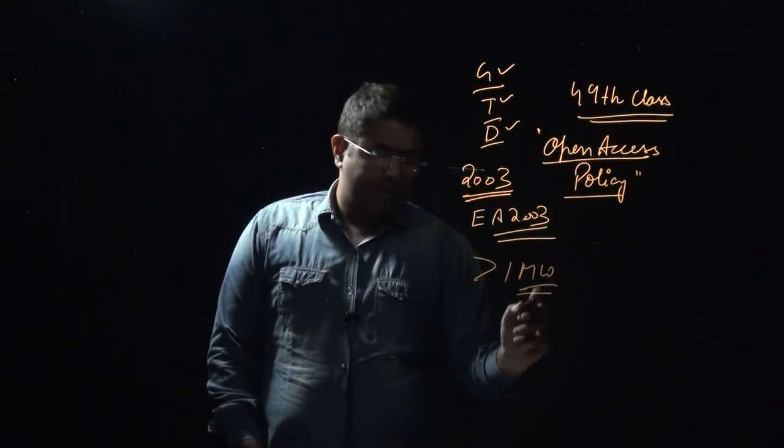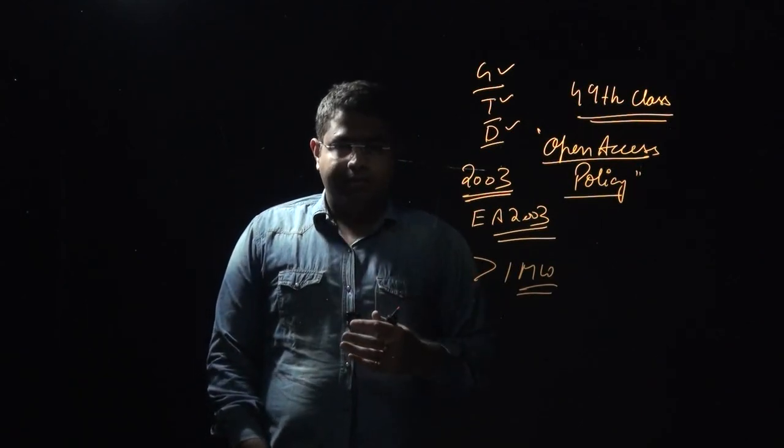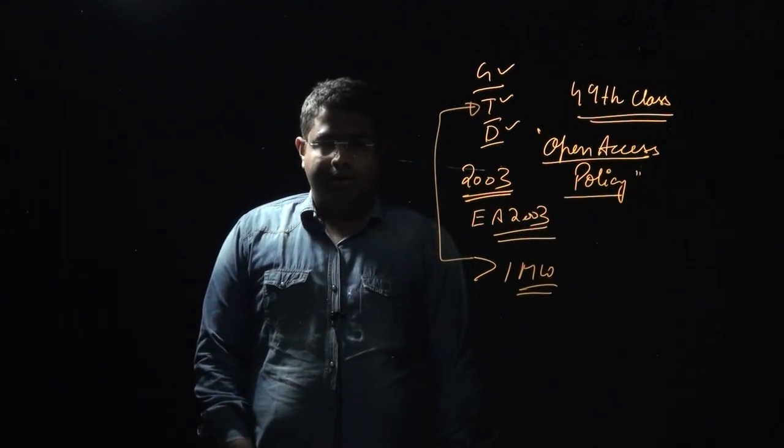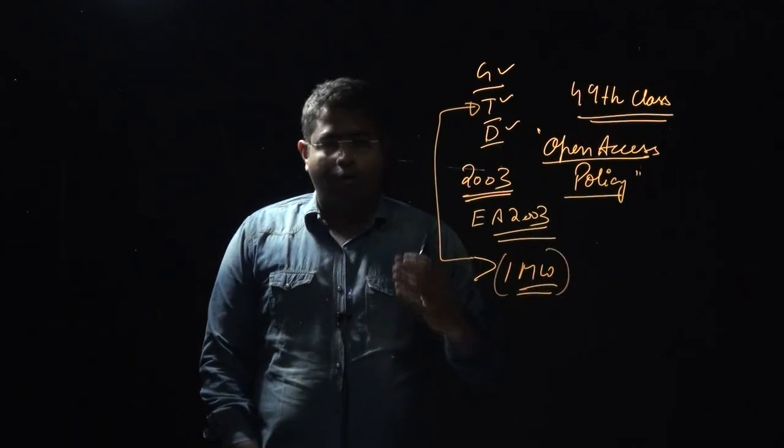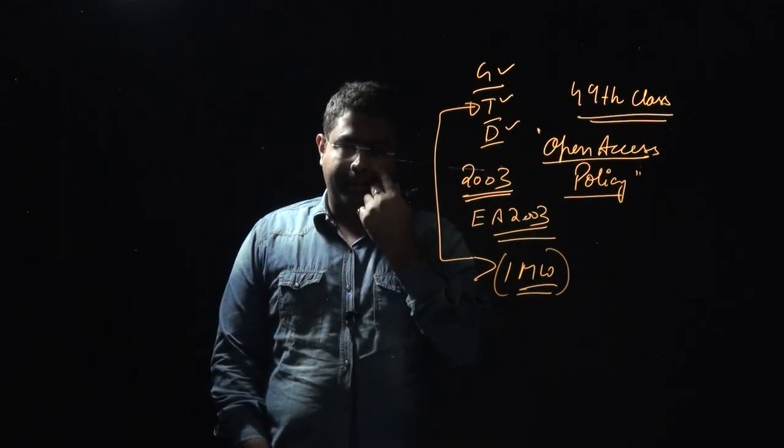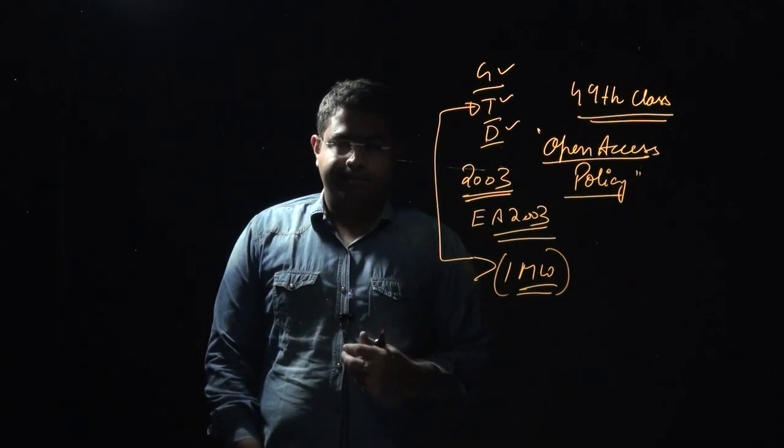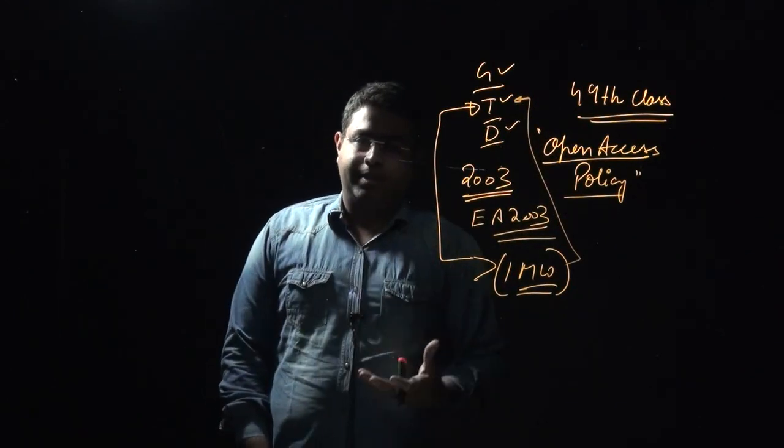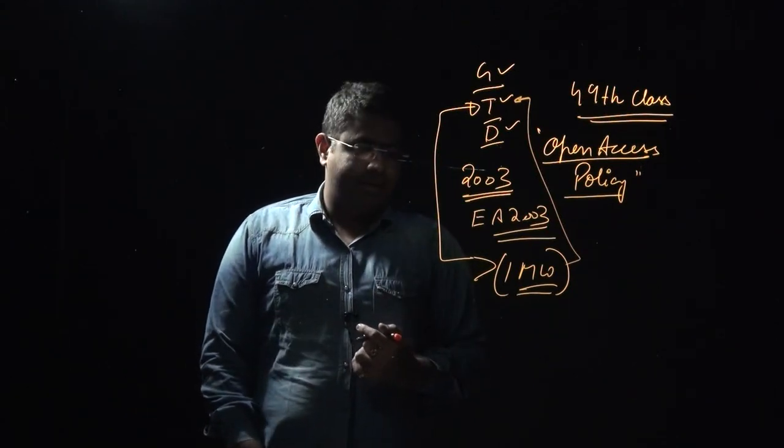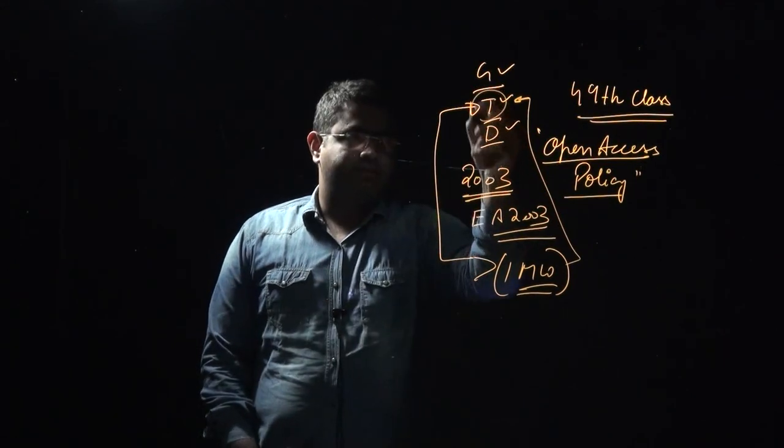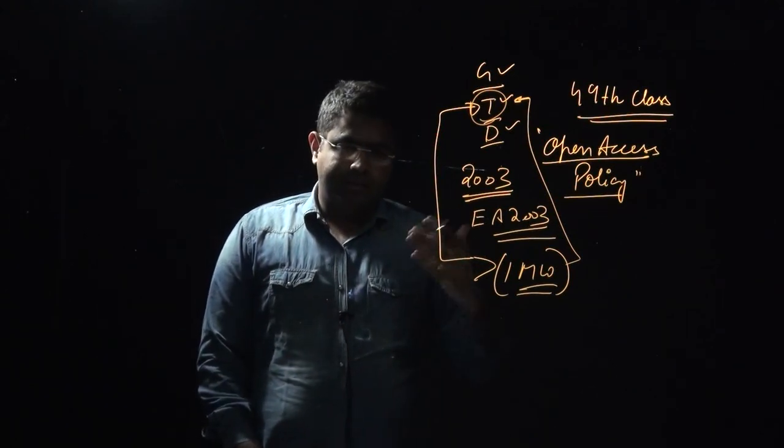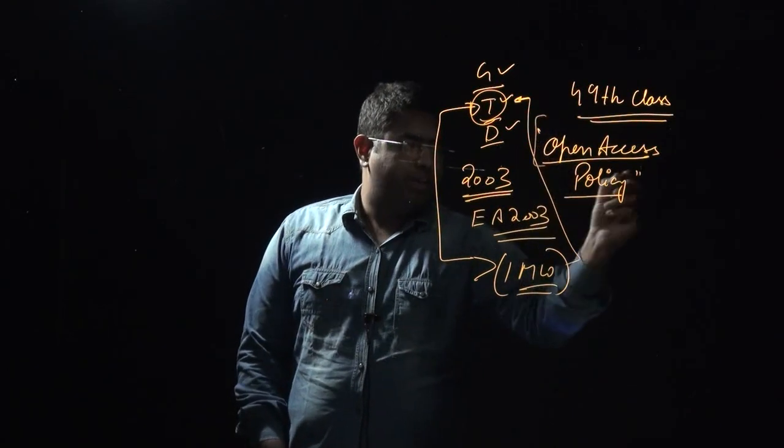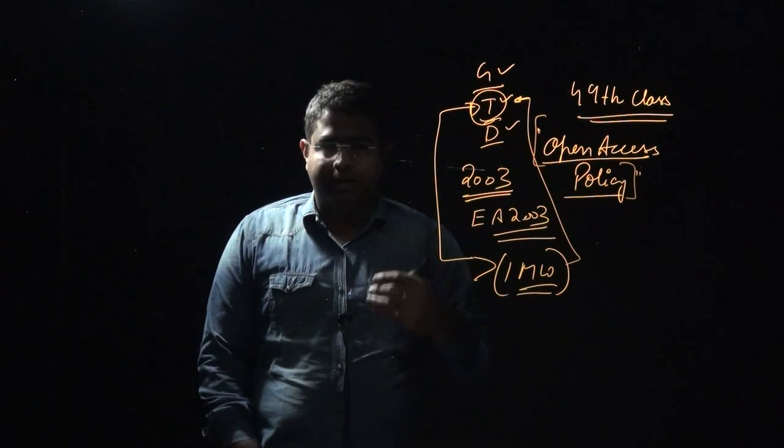Big customers who have a power requirement above one megawatt can actually choose from the companies that are transmitting the electricity. They can get in touch with the transmission companies - most of the transmission network is actually owned by the government - and decide on a price for short term, medium term, or long term. This open access policy was introduced for competition and for the betterment of big customers who were in need of more electricity.